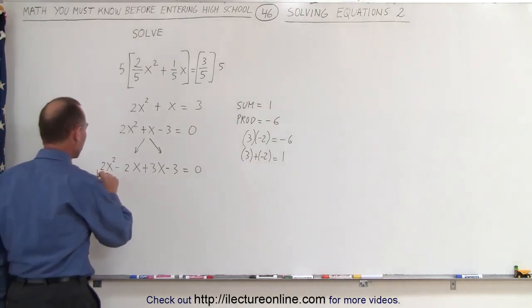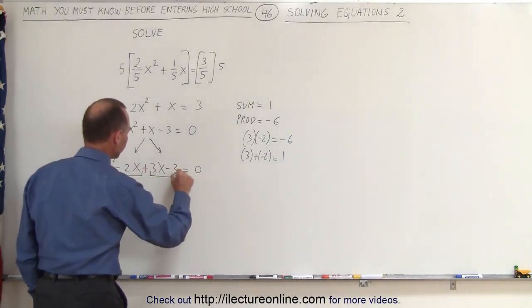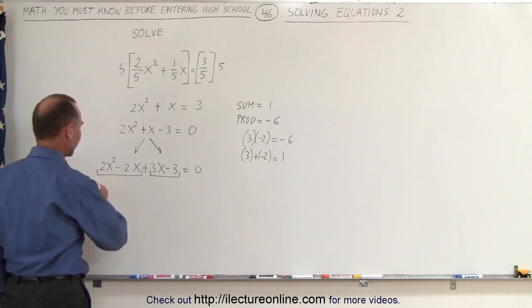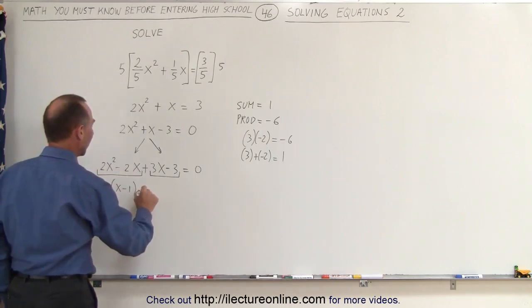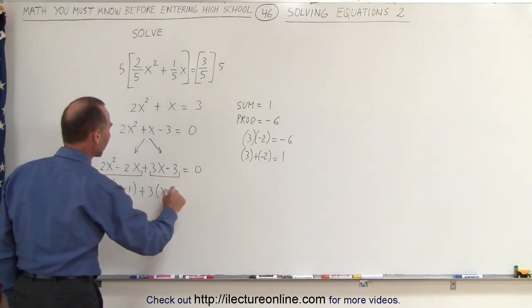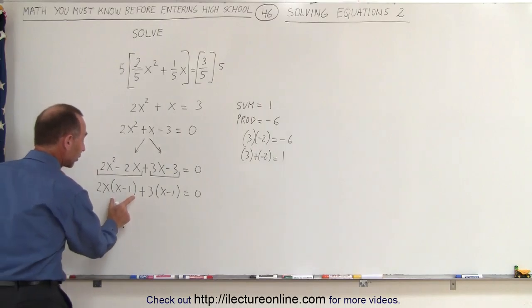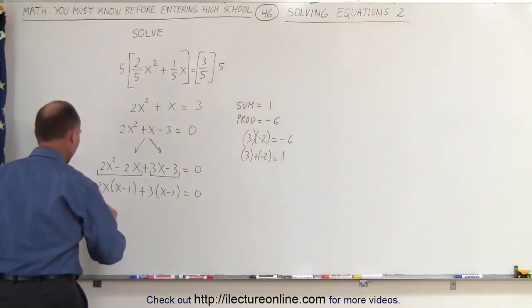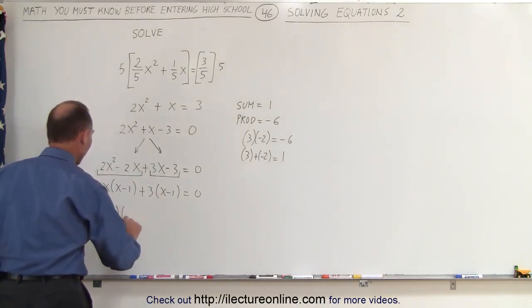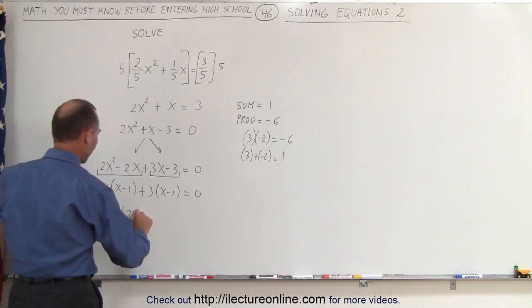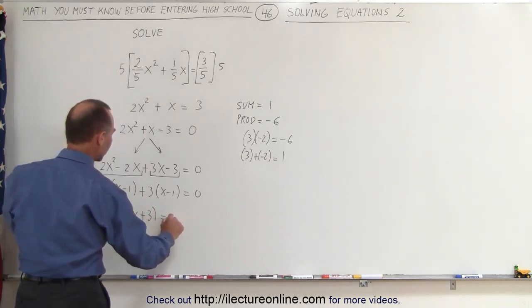We're going to group them in two groups of 2. On the left side, we can factor out a 2x, and we'll end up with an x - 1, and +3 times, here we get an x - 1. And it looks like it is factorable, because now we can factor out a common term of x - 1. So x - 1 times what's left, 2x + 3 = 0.